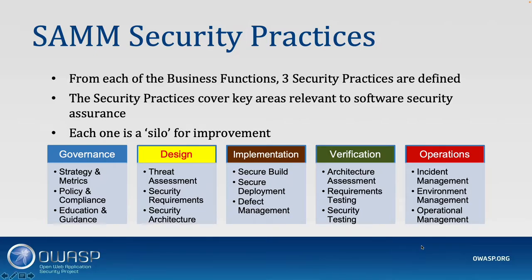Your strategy should be based on your risk exposure and risk appetite. For instance, if you're not working with external suppliers, you don't have to invest in that security practice. On the other hand, if you're building software, you should probably check your dependencies on third-party packages, making sure there are no vulnerabilities, and introduce software composition analysis tooling. Every time you release software, you don't want vulnerable dependencies — log4j is a perfect example, and this falls under secure build.